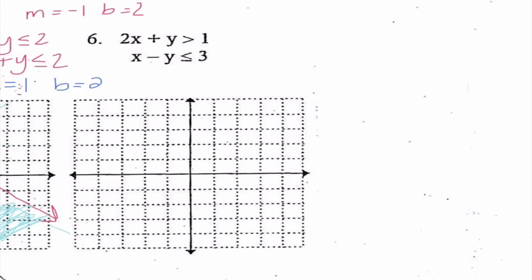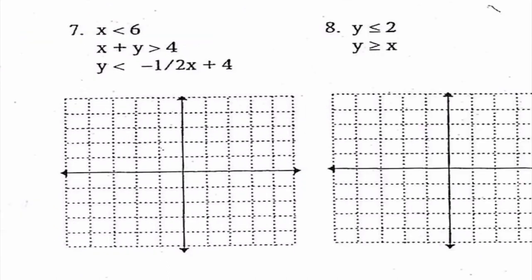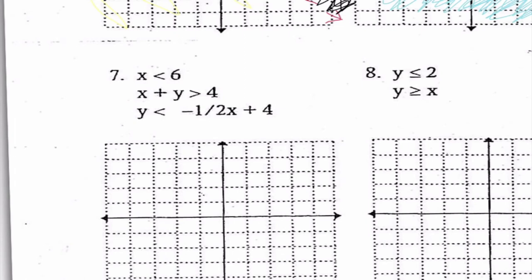We're going to skip number 6 and focus on 7 and 8. In my opinion, number 7 is as tough as it gets because we have three different inequalities. As a side note, make sure you understand how to handle a combined inequality written in condensed form — for example, that's really the same as two separate inequalities: whatever's on the left and middle is one inequality, and whatever's on the right and middle is the other. Don't be surprised if something like this comes up on our test.